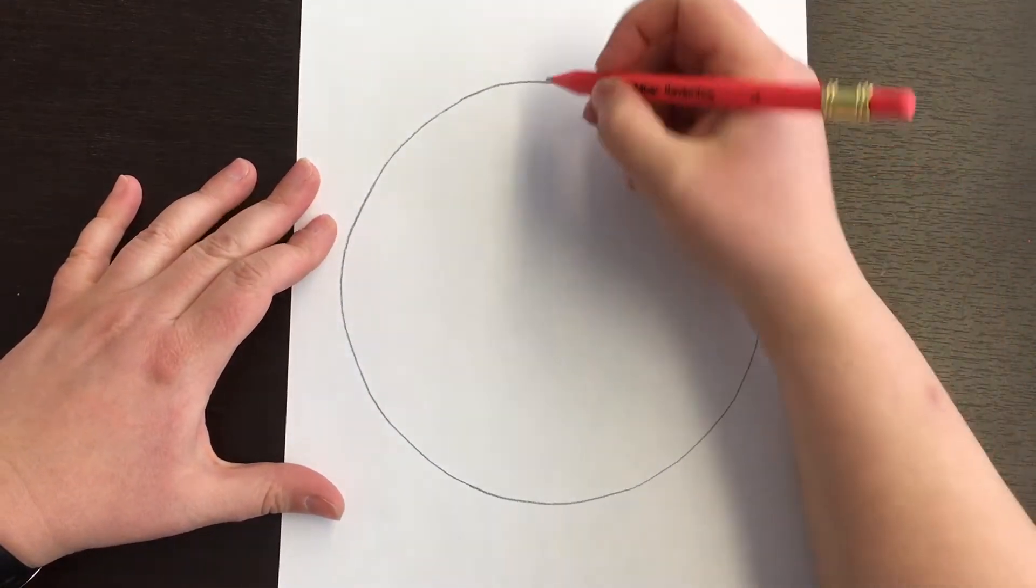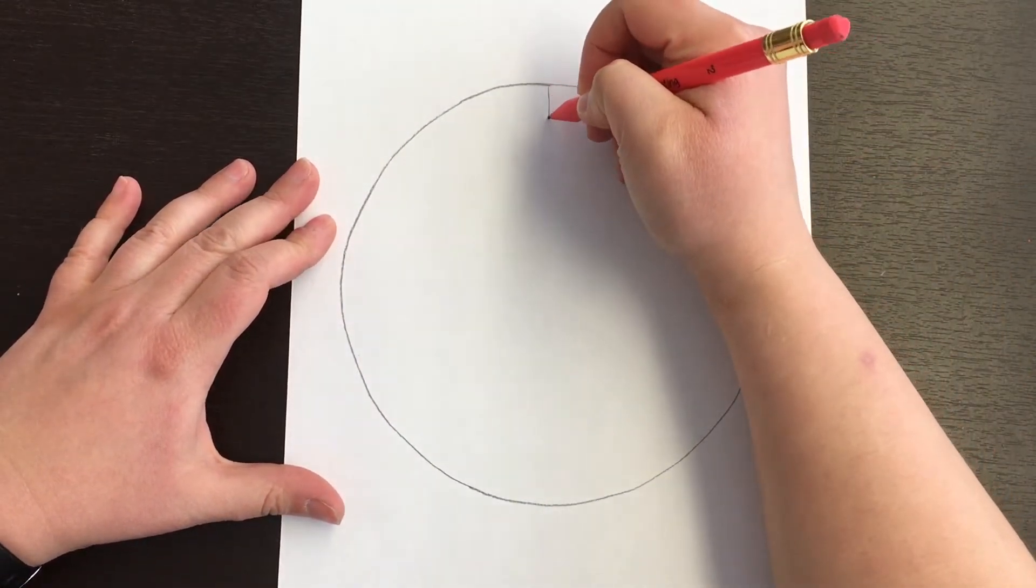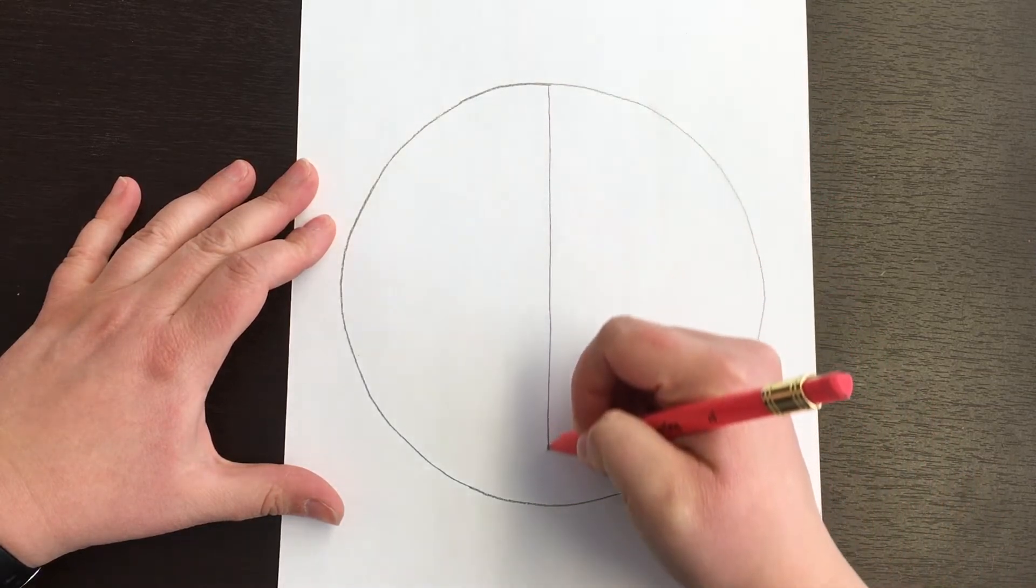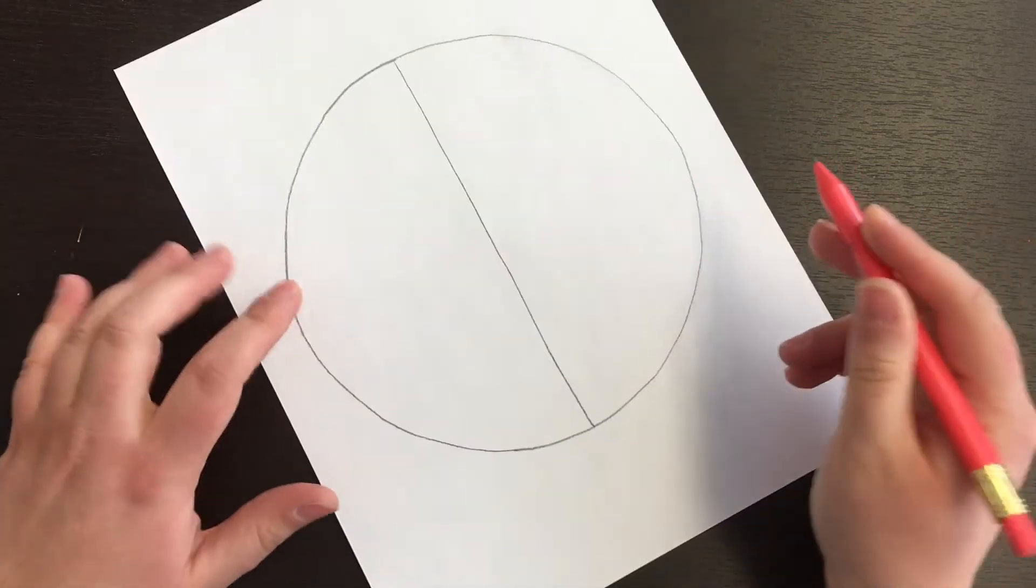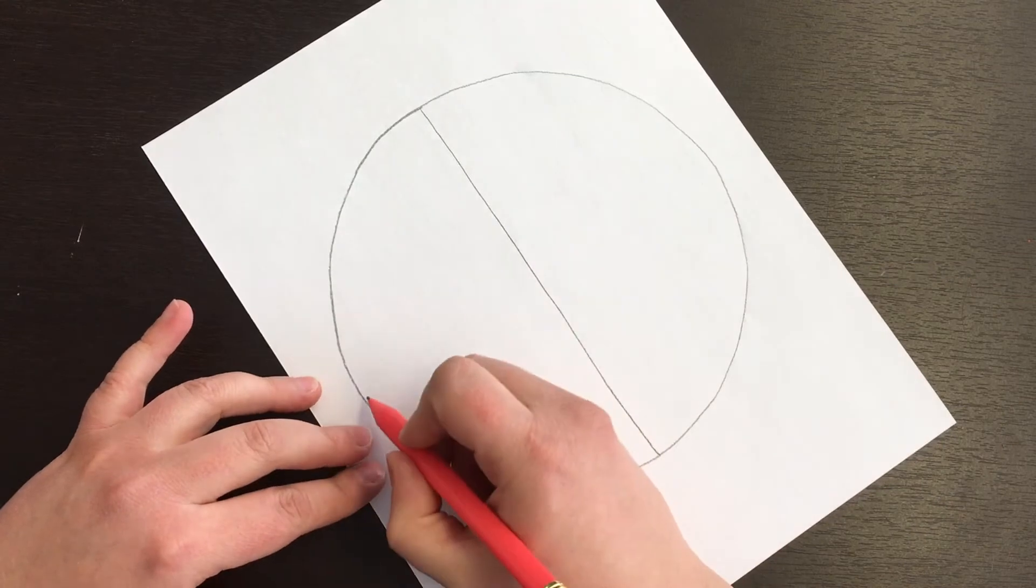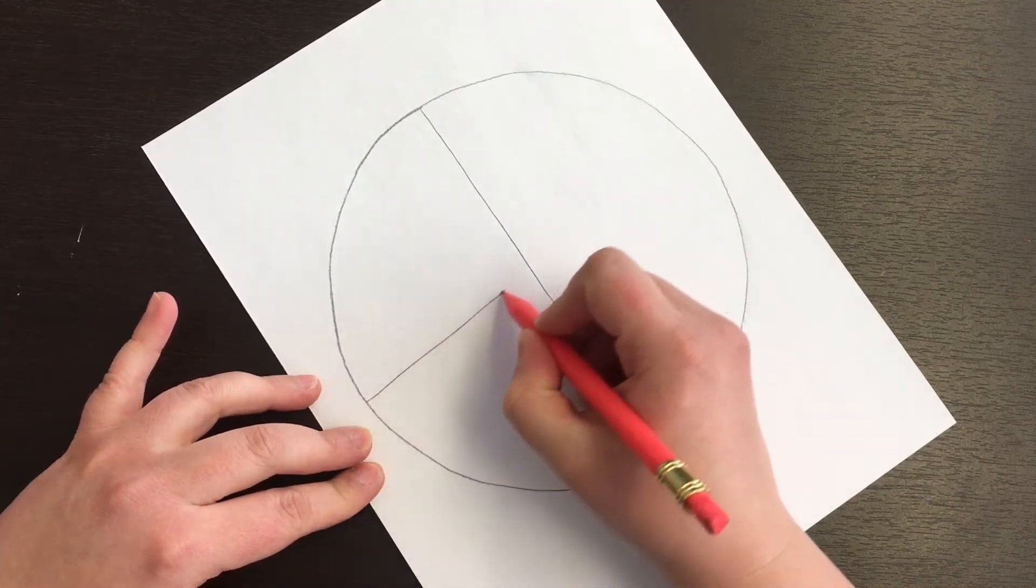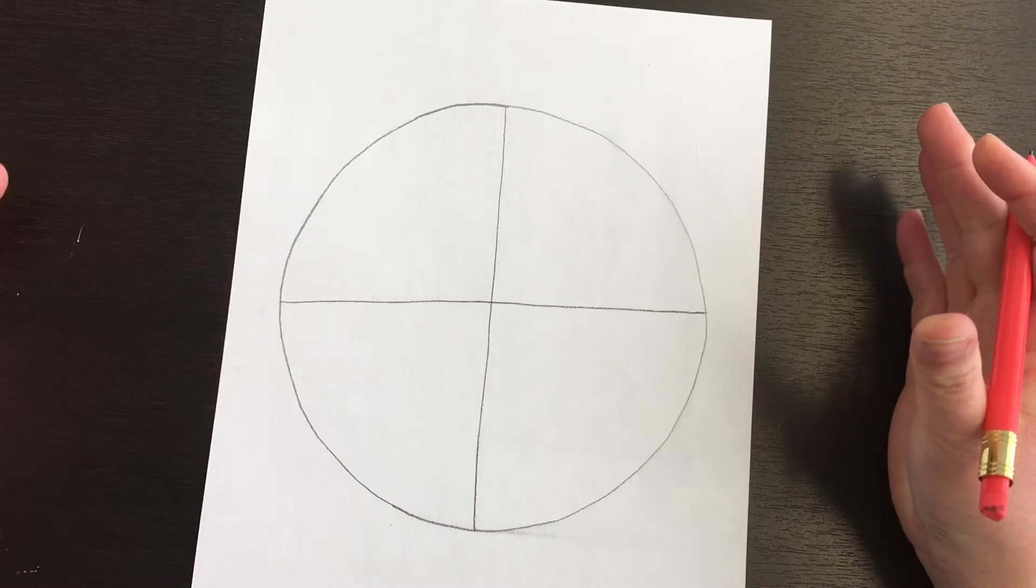So we are gonna start by drawing a line right down the middle. Remember, we're gonna draw it light until we got it right, just in case we need to erase, and then a line right across the middle. So it's gonna kind of look like a window.